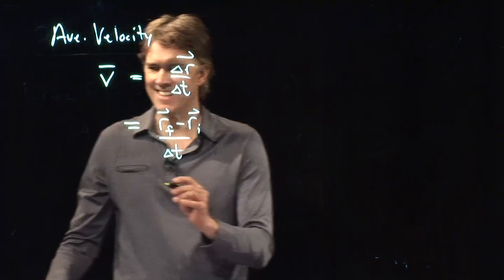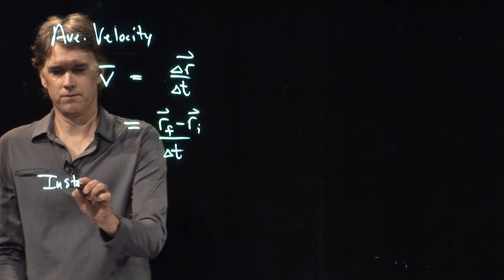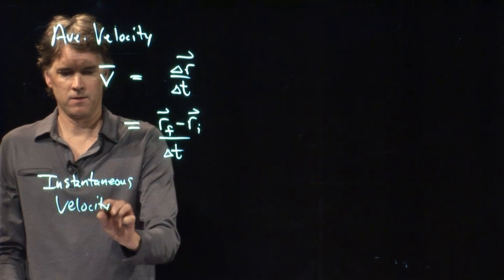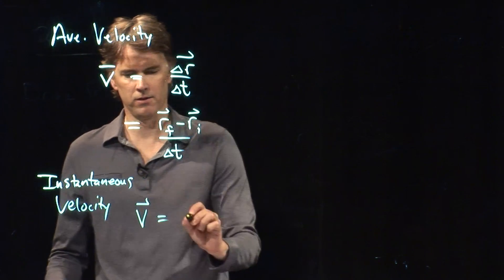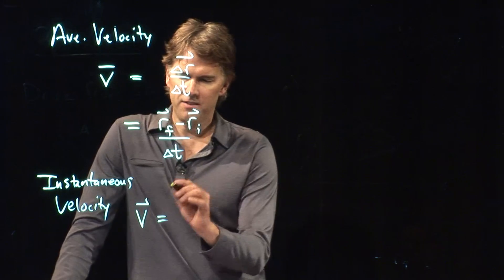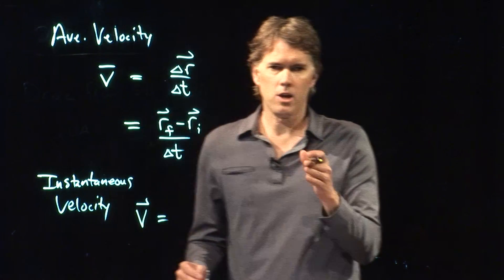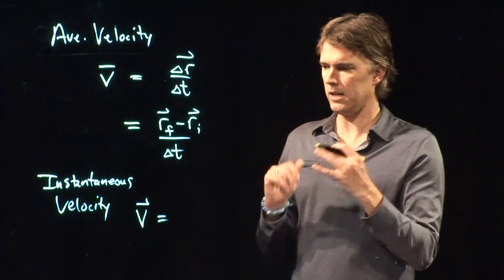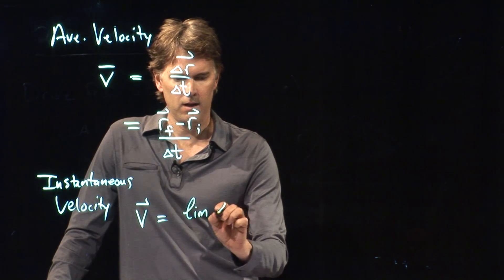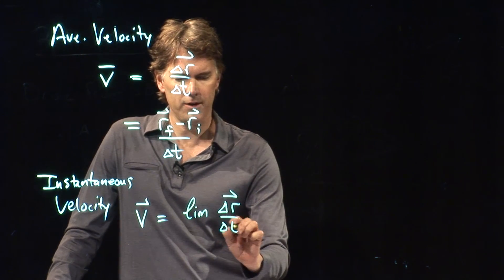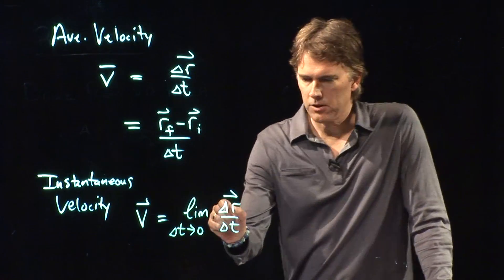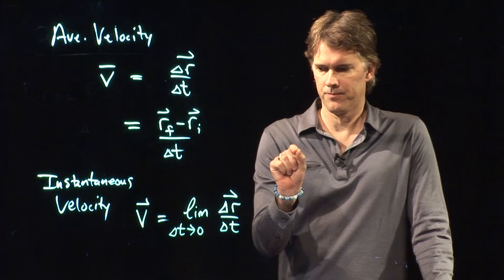All right, what about instantaneous velocity? Well, that one we can write like this. Also a vector, just not an average, so we don't put the bar on it. And instantaneous velocity is when you're driving along and you look at your speedometer in your car, that is your instantaneous velocity. And so it is the limit of delta R over delta T as delta T goes to zero. Namely, I'm going to take this measurement over a very short time.